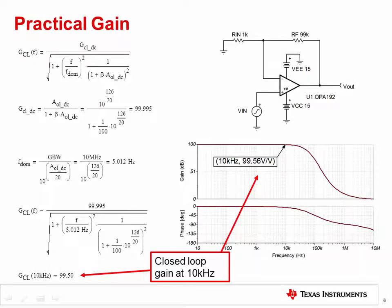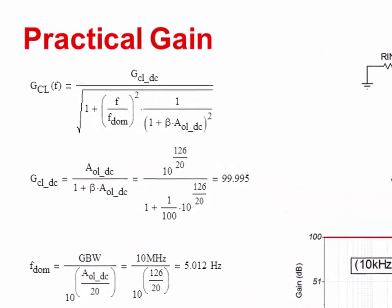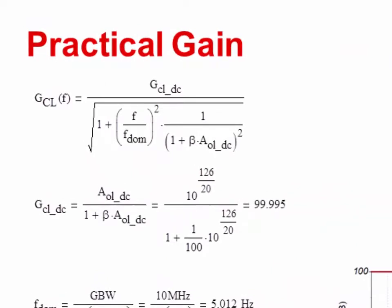Now let's discuss how to calculate the practical gain of an op amp circuit. It is often assumed that the closed loop gain of an amplifier circuit is constant until it starts to roll off at the cutoff frequency. In reality, the closed loop gain begins to decrease long before the cutoff frequency, and the error introduced by this attenuation is usually unexpected. The closed loop gain at any frequency can be calculated using this equation, where F is frequency, GCLDC is the DC closed loop gain, FDOM is the dominant pole, beta is the feedback factor, and AOL DC is the DC open loop gain.